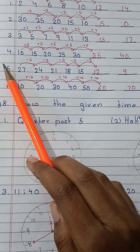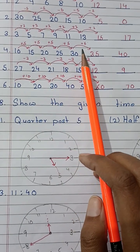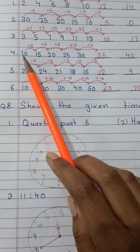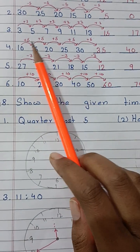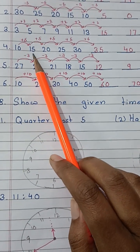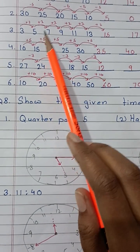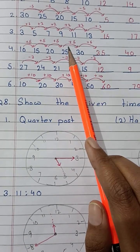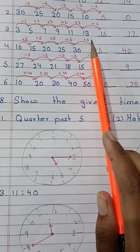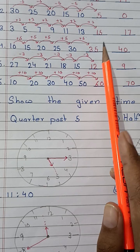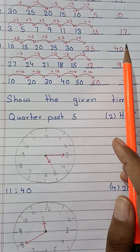Question number 4: 10, 15, 20, 25, 30. Here, as you can see, each number is being increased by 5 to make the next number. 10 plus 5 is 15, 15 plus 5 is 20, 20 plus 5 is 25, 25 plus 5 is 30. So 30 plus 5 will be 35, which will be the next number in the series, and the last number will be 35 plus 5 is equal to 40.